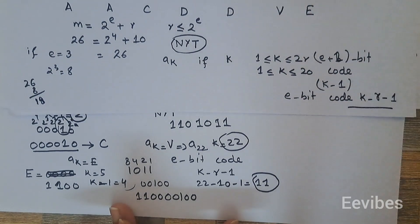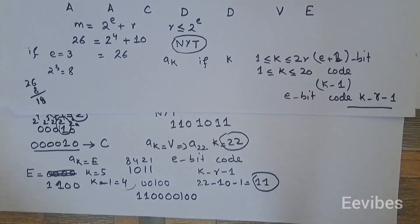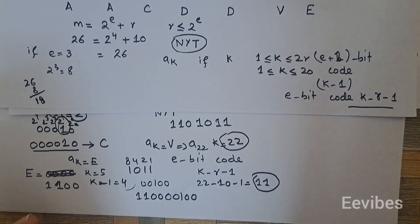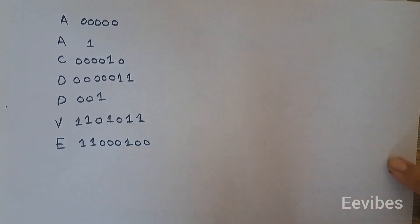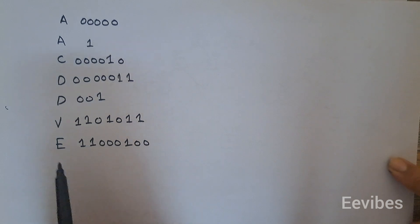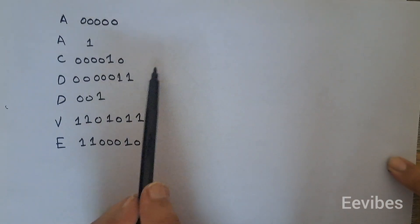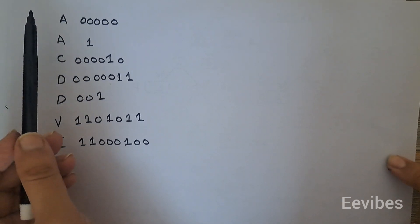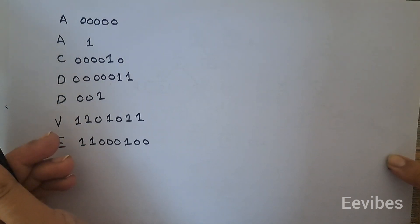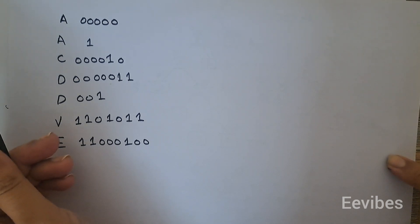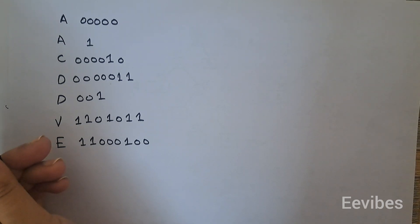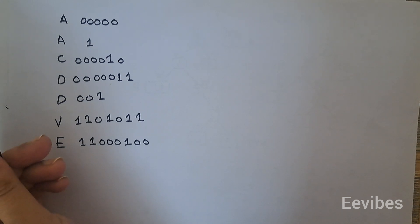Each symbol has now been assigned a code, and the final result shows variable-length codes assigned according to the adaptive Huffman coding scheme. Adaptive Huffman coding is better than simple Huffman coding because we don't need to know symbol frequencies beforehand — encoding and decoding proceed based on the arrival of symbols. If you have questions, drop them in the comments. Thank you for watching, and please subscribe and like.